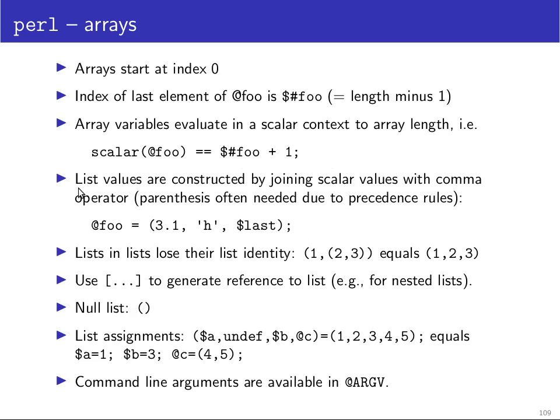You can construct lists by using the comma in order to join together scalars into a list. It's customary to put parenthesis around this. This may often be necessary due to precedence rules. But it's not actually the parenthesis that are the constructor of the list. The list is being constructed by the commas here really. If you nest lists inside each other, they lose their identity. So 1,2,3 is the same as 1,2,3. This is a consequence of the comma is actually the list constructor and the parenthesis are just for operator precedence and therefore don't make any difference here.